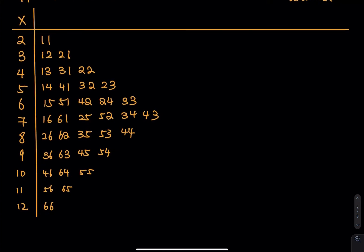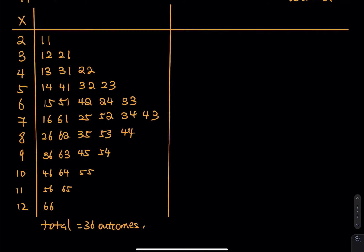Count carefully — the total is 36 outcomes. I use the second column to organize the outcomes in the sample space into the correct category. The third column is probability. This is frequency divided by total frequency. Out of 36 outcomes, there is one outcome satisfying X equals 2, so that will be 1 out of 36.